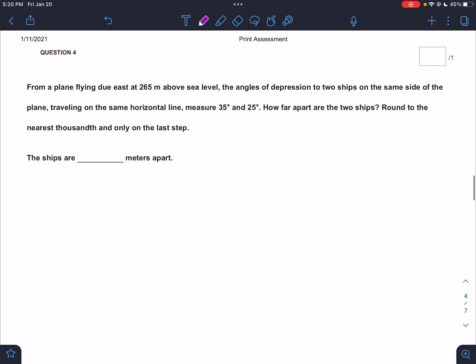Alright, number four. A plane flying due east is 265 above sea level. So we got a plane in the air here. It's above sea level. That's 265. That's a vertical number. Angle of depression to two ships on the same side of the plane is 35 and 25. So we've talked about this some, guys.